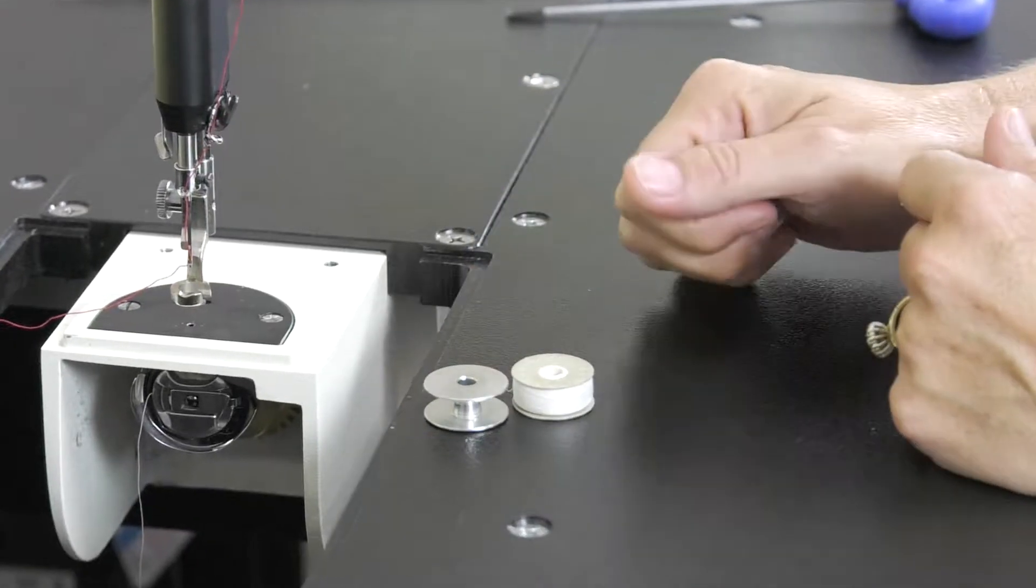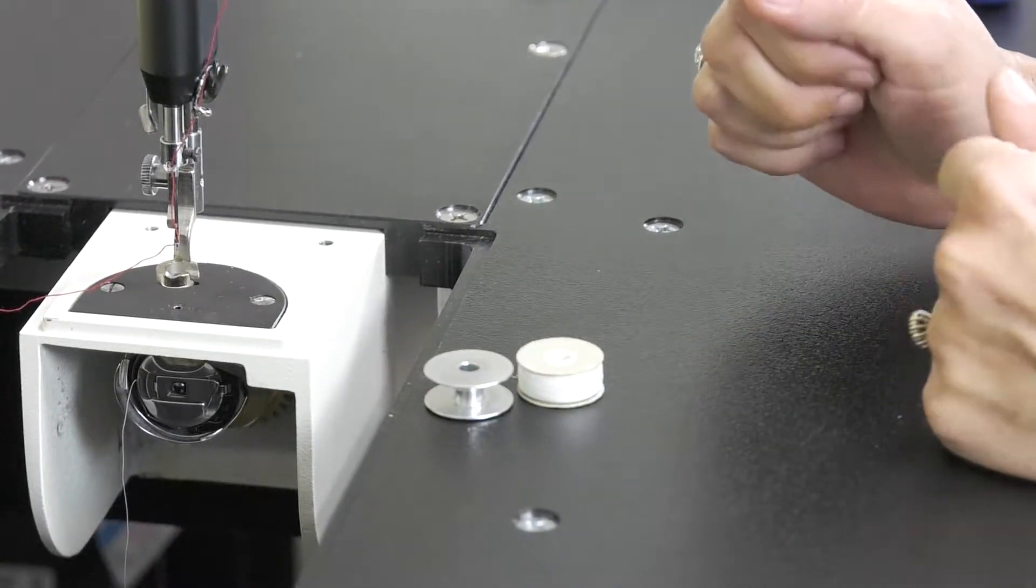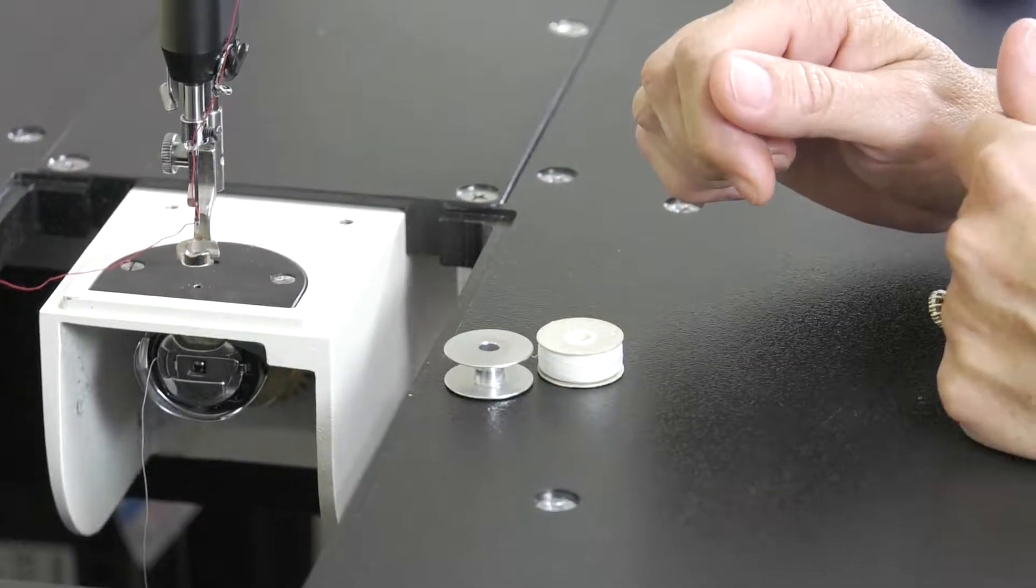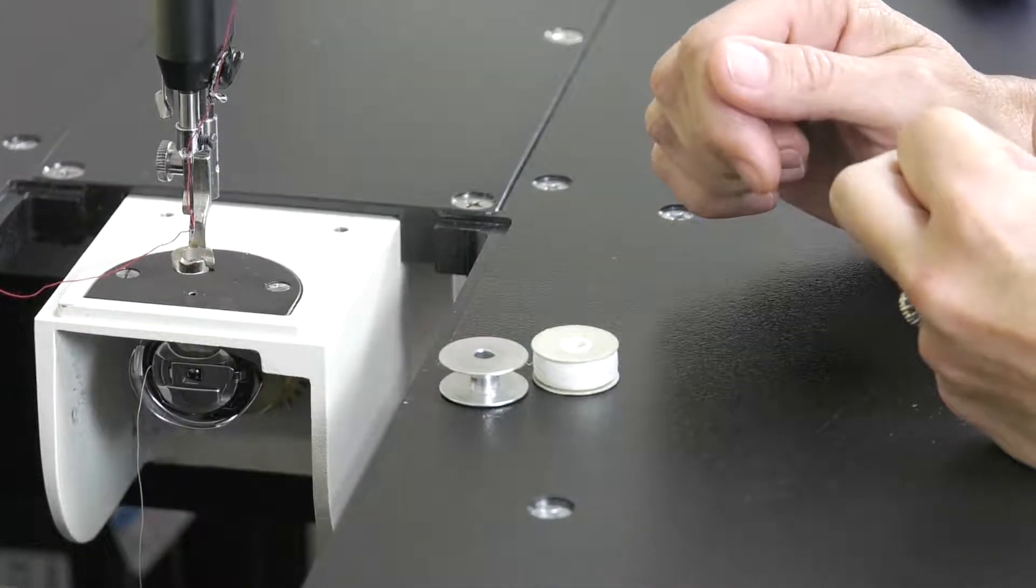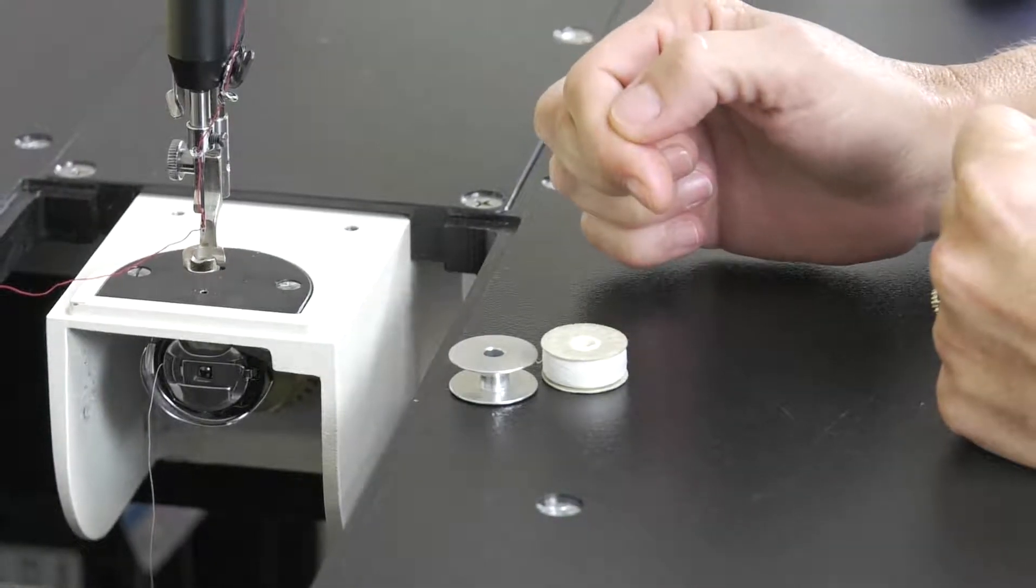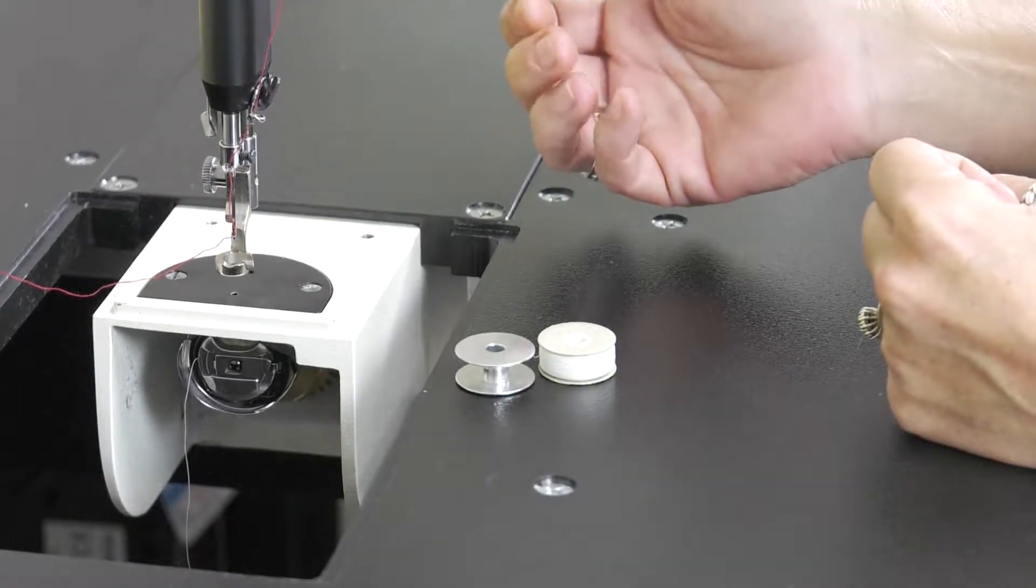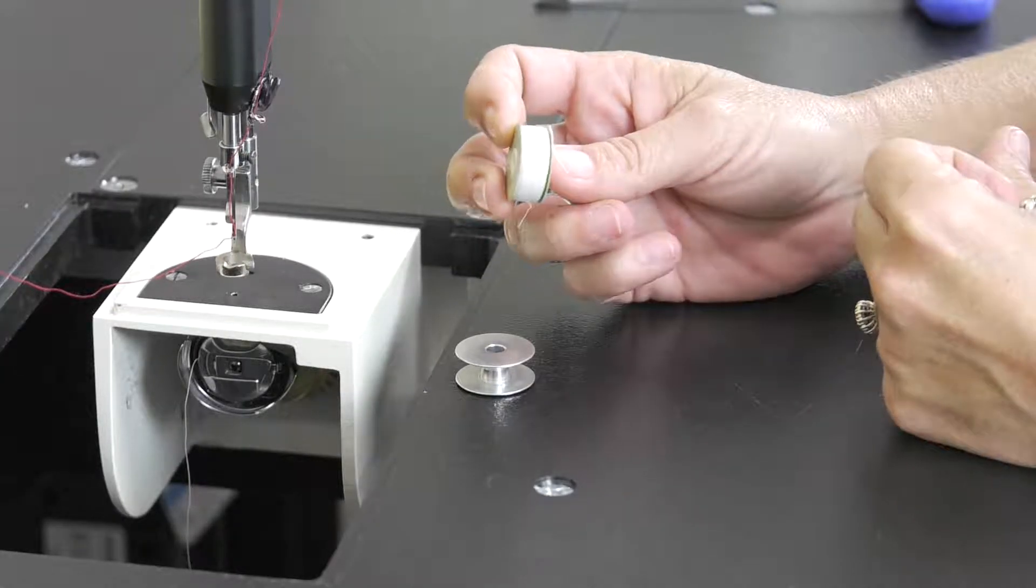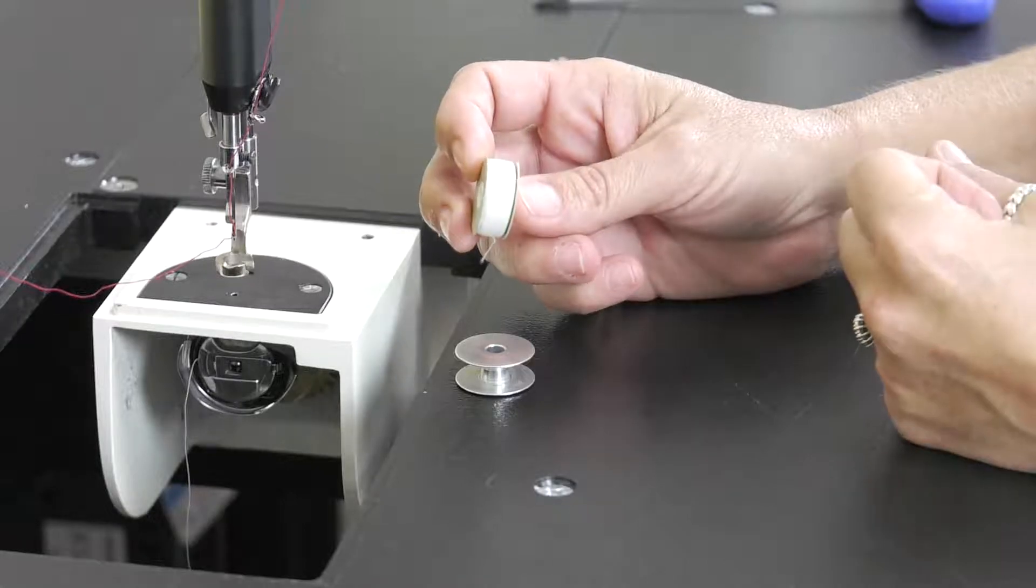Then we have our pre-wounds. We highly recommend using Superior Super Bob pre-wound bobbins. They are a finer thread than what we're using on top. They come in an array of colors. The one thing that we have found is that they're designed for less lint and they're actually designed by a quilter.